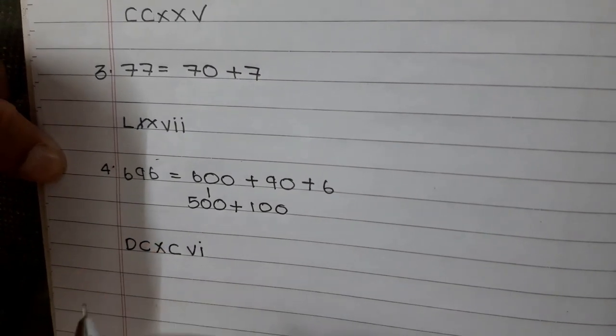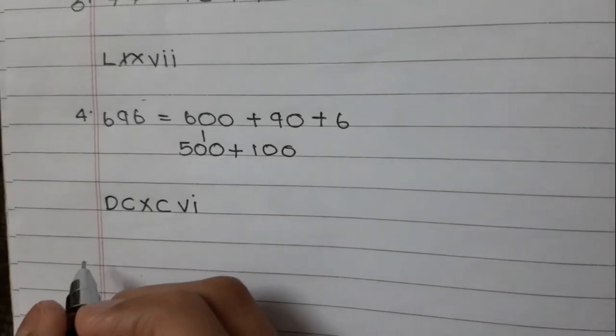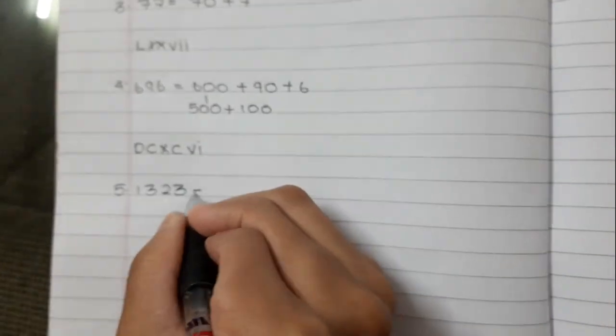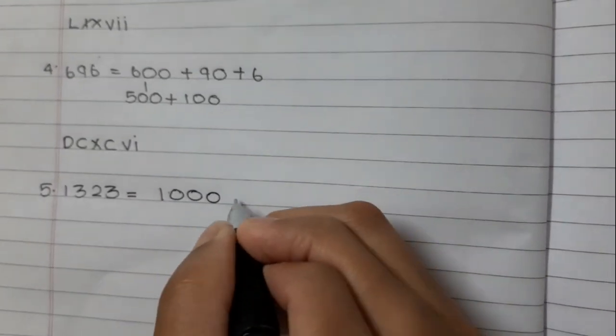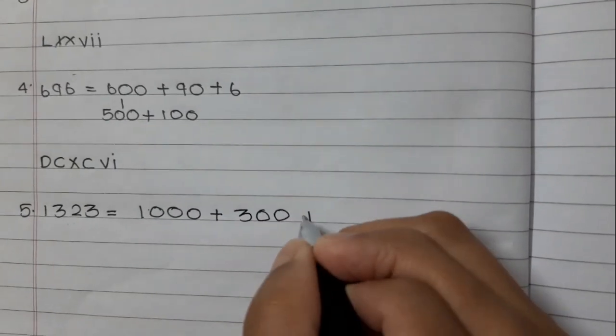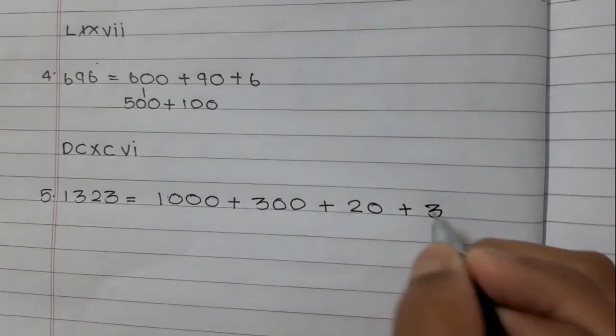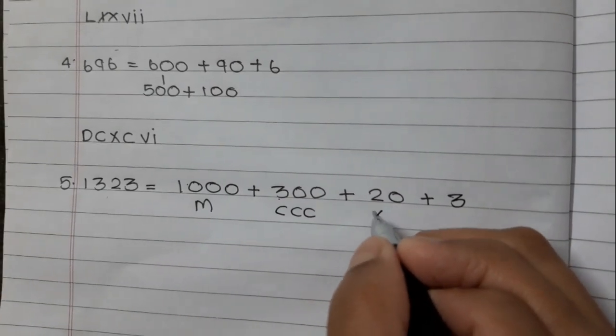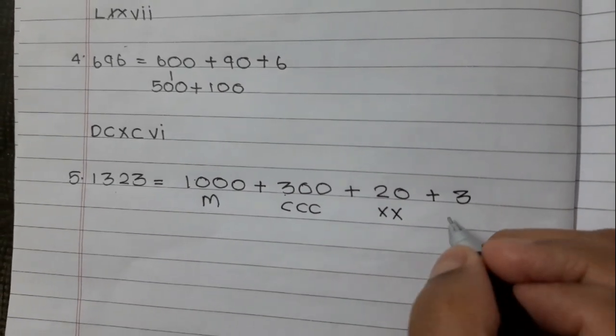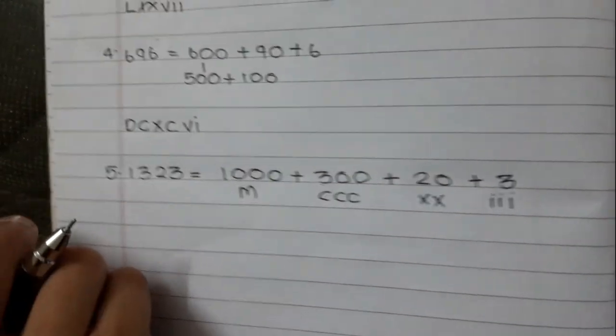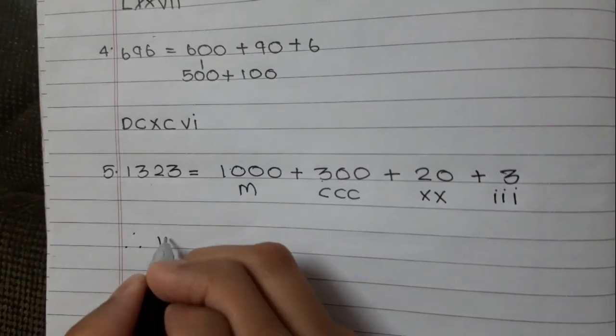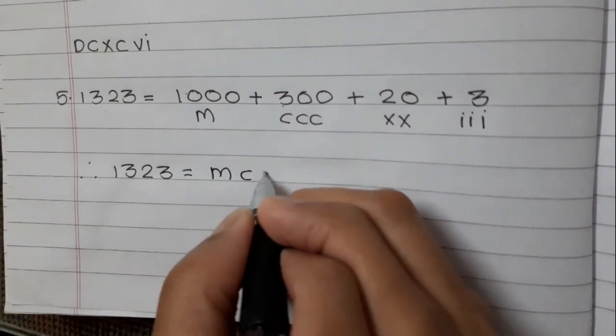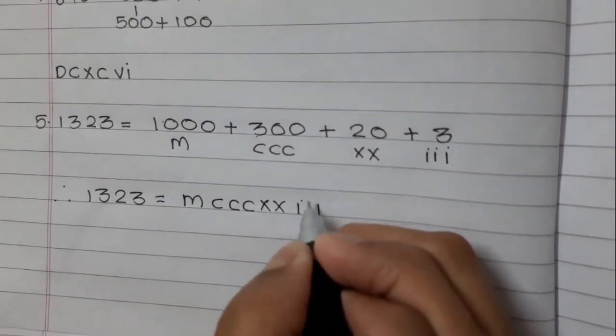Therefore, 696 equals DCXCVI. Our 5th example is 1323 equals 1000 plus 300 plus 20 plus 3. 1000 is M, 300 is CCC, 20 is XX, and 3 is III. Let's join it together. Therefore, 1323 equals MCCCXXIII.